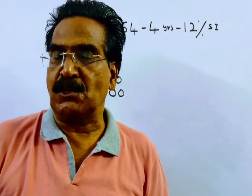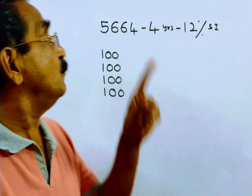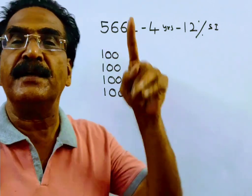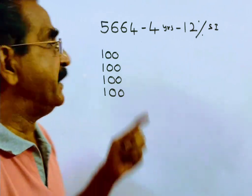Friends, what annual installment, what annual payment will amount to 5,664 in 4 years? Say that the equal annual installment is 100.